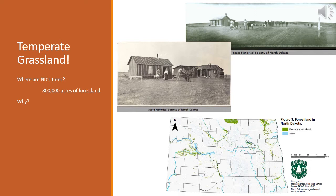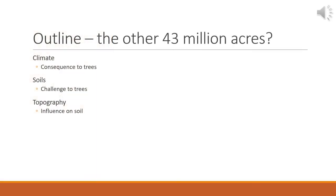These linear planted forests fall within the other 43.7 million acres of North Dakota's landscape that are not naturally forested. This raises the question: why were these 43 million acres not forested? Fundamentally it's because of North Dakota's climate, topography, and the historic disturbance regime of frequent fire and large mammal grazing — though we're going to focus on climate, topography, and the soils. This presentation is about those other 43 million acres, how they tended not to grow natural forests, and what are the implications of planting trees in these areas.